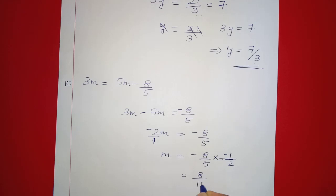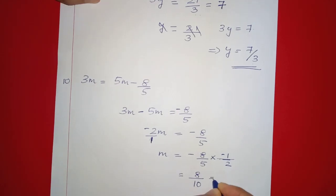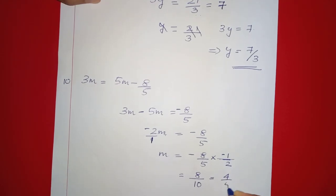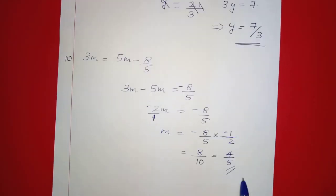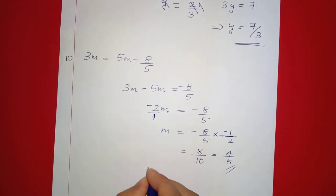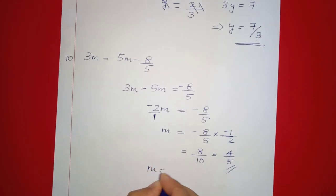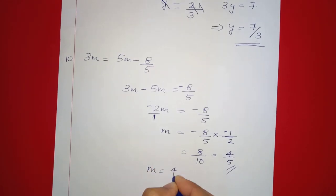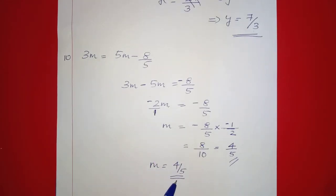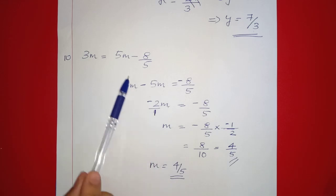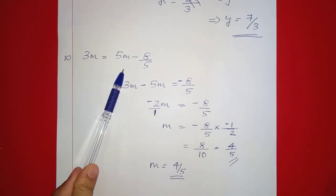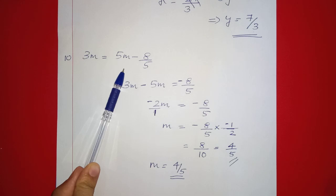Dividing both sides by minus 2: m equals 4 by 5. We substitute m equals 4 by 5 into the equation, and the left-hand side equals the right-hand side. Check complete.